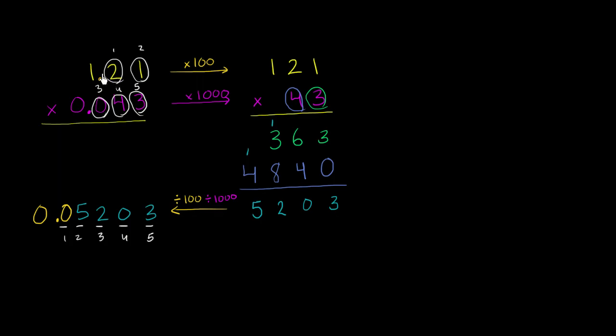Well, when you ignored the decimals, when you just pretended that this was 121 times 43, you essentially multiplied this by 100 and 1,000. And so to get from the product you get without the decimals to the one that you need with the decimals, you have to then divide by 100,000 again. Multiplying by 100,000 is essentially equivalent to moving the decimal place five places to the right, and then dividing by 100,000 is equivalent to moving the decimal five digits to the left.